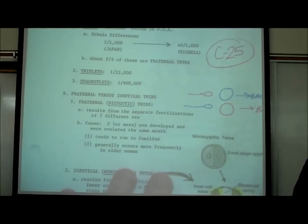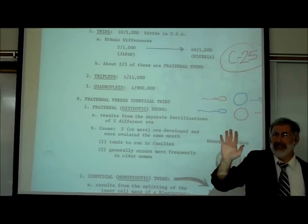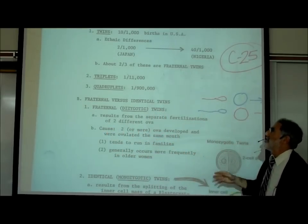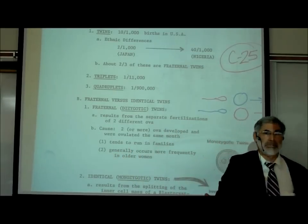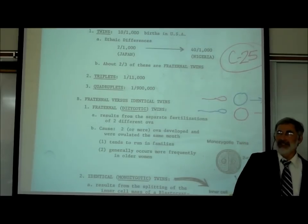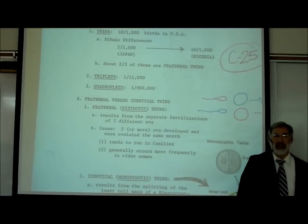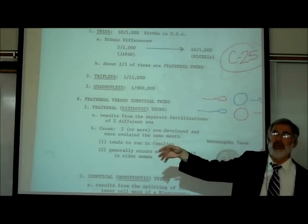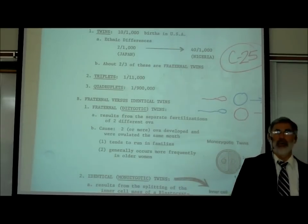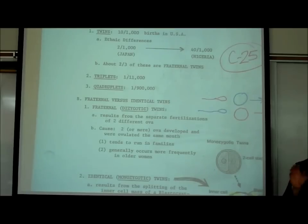The probability of triplets is less than one out of ten thousand. The probability of quads is almost one out of a million. Anything more than that would never happen naturally — having five or eight babies would never happen naturally. Octomom and anyone who has more than four babies has had medical intervention: fertility drugs, in vitro fertilization, or implanted multiple fertilized eggs. The human body isn't designed to give birth to that many.